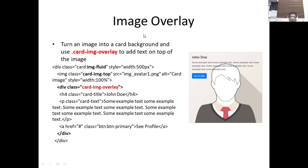We also have the image overlay. The image overlay turns an image into a card background, and we use the card-img-overlay class to add text on top of the image. In the example, we have the image just like in the previous example, except this time we create a division with class card-img-overlay. Inside it we have the card-title and paragraph, so all the text wrapped inside the card-img-overlay is placed on top of the image.